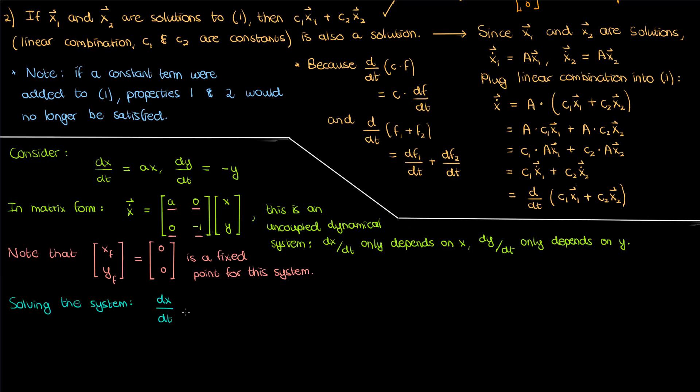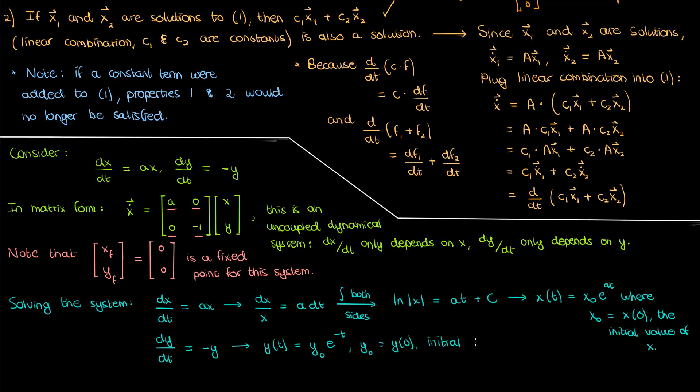When we solve the first equation, the dx by dt, using separation of variables, we find that x becomes a constant times the exponential of a times t. This initial constant I've called x0 because when t is 0, x is x0, so x0 just denotes my initial value of x. We can use the exact same technique to solve for y as a function of time, in which case we get y0 times the exponential of negative t, where y0, just like x0, is the initial value of y.